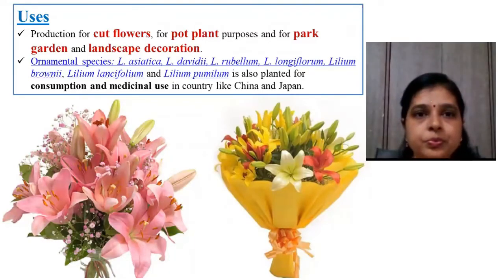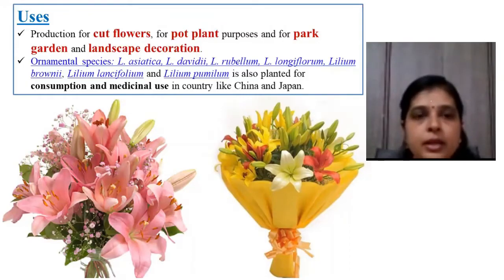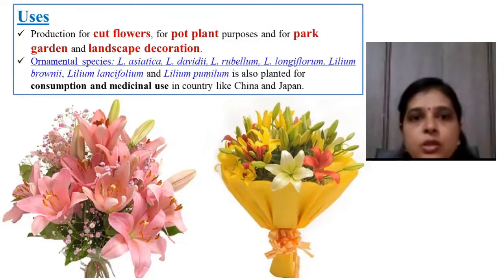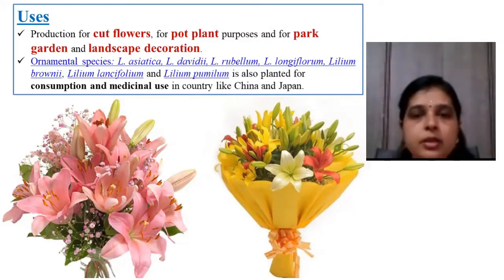Regarding the uses of lilium: the flower is primarily grown for cut flower production. It is also grown for pot plant purposes and for park, garden, and landscape decoration. Additionally, species like Lilium asiatica, L. davidi, L. rubellum, L. longiflorum, L. brownii, L. lancifolium, and L. pumilum are used for consumption and medicinal purposes in countries like China and Japan.